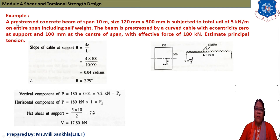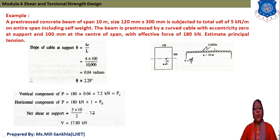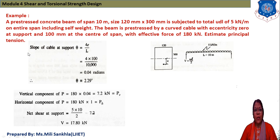Example 2: A prestressed concrete beam of span 10 m with a 120×300 mm rectangular section is subjected to a UDL of 5 kN/m including self-weight. The beam is prestressed by a curved cable with eccentricity 0 at the support and 100 mm at the center of span, with an effective prestress force of 180 kN. Estimate the principal tension.